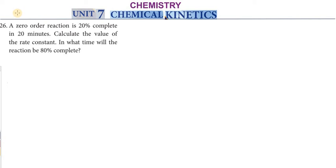Hi students, greetings from Succession Academy. Chemistry Unit 7, Chemical Kinetics. A zero order reaction is 20% complete in 20 minutes. Calculate the value of the rate constant. That is part one. Next part: in what time will the reaction become 80% complete?